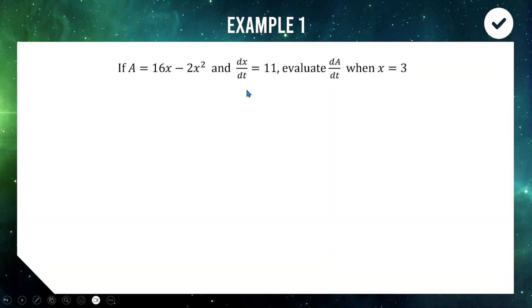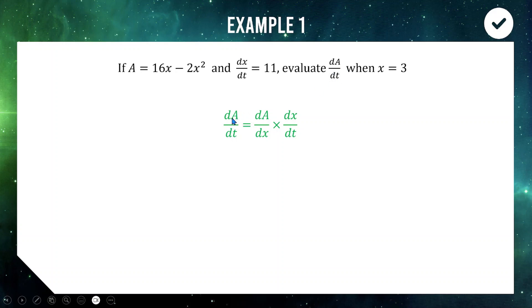The trick here is that we're trying to find dA/dt, the derivative of A in terms of t. However, we have an equation relating A and x, so we're going to have to chain it all together. This is called related rates of change — finding a derivative with a third variable involved. We write dA/dt as a product of fractions: dA/dx multiplied by dx/dt. We're splitting dA and dt apart and filling the gaps with dx's, because x is the extra variable introduced in the question.